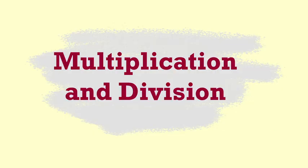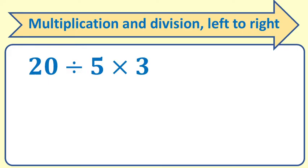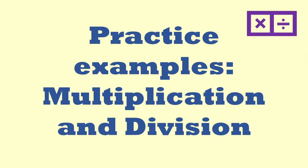And now an example of multiplication and division left to right. 20 divided by 5 times 3 equals 4 times 3 which equals 12. Here are two practice examples for multiplication and division.